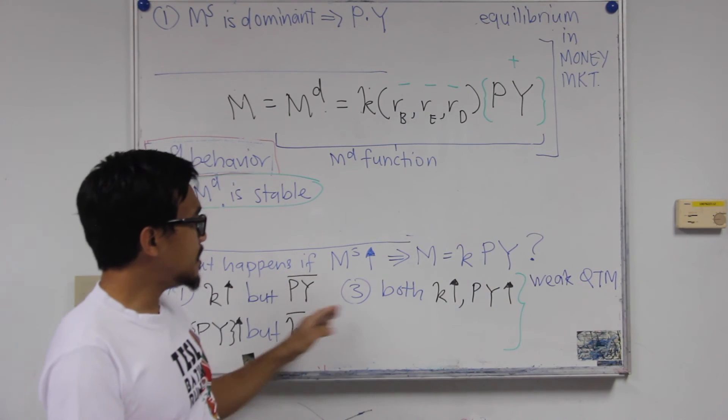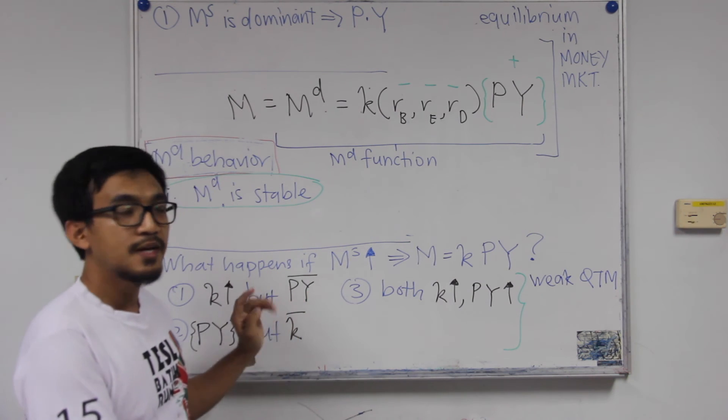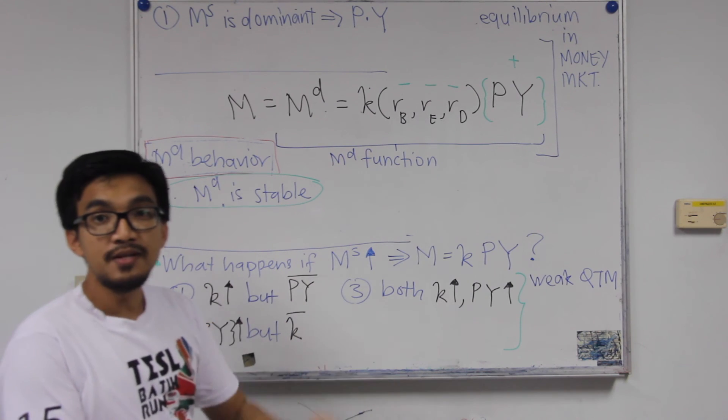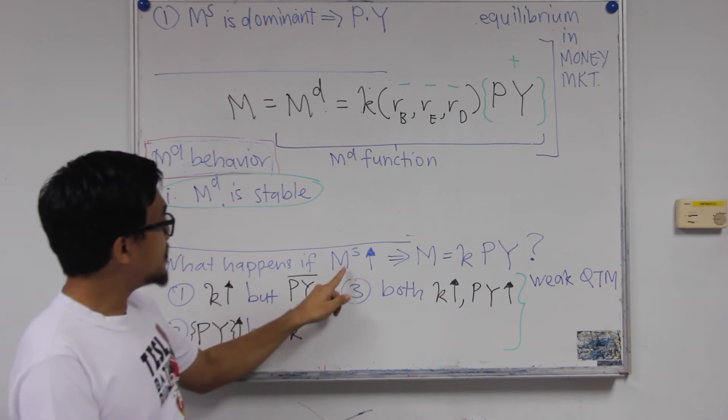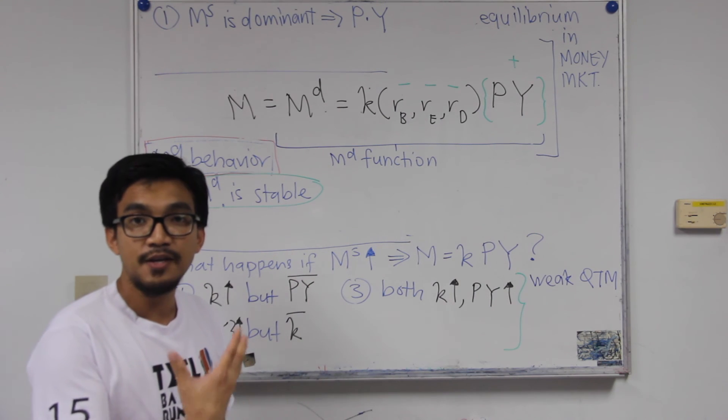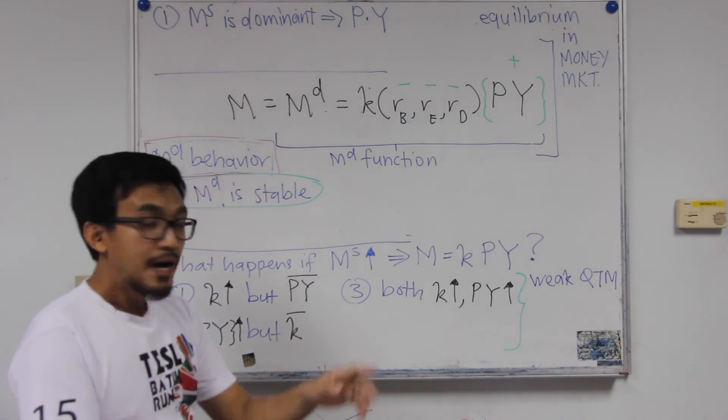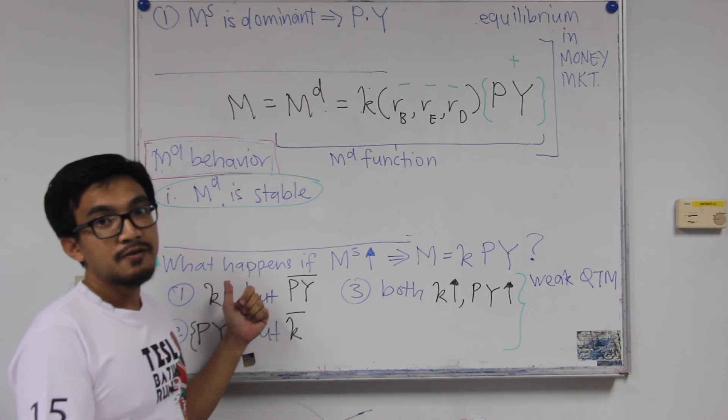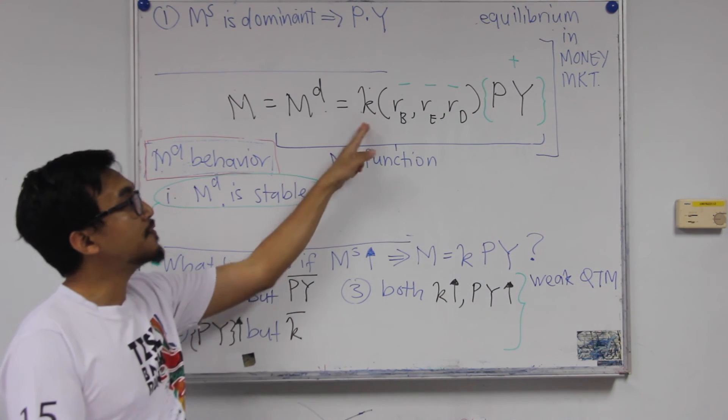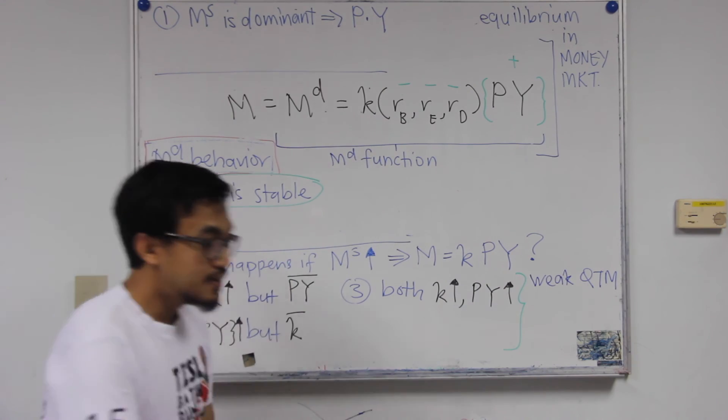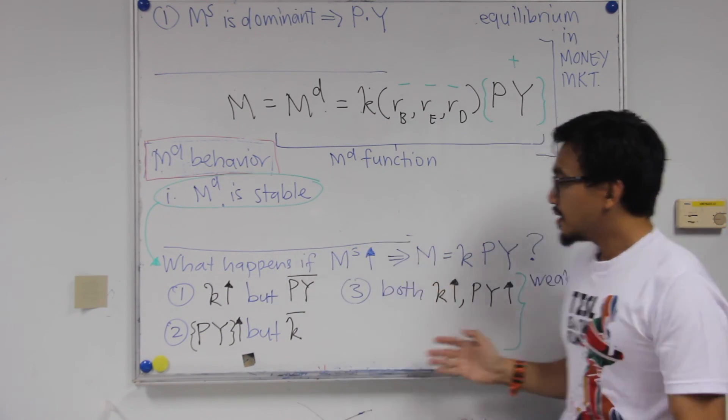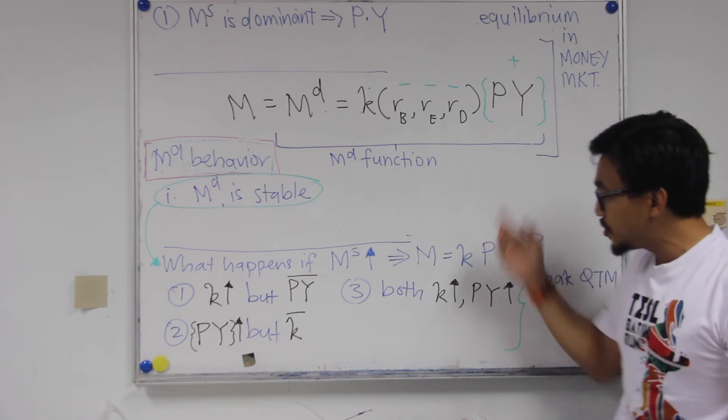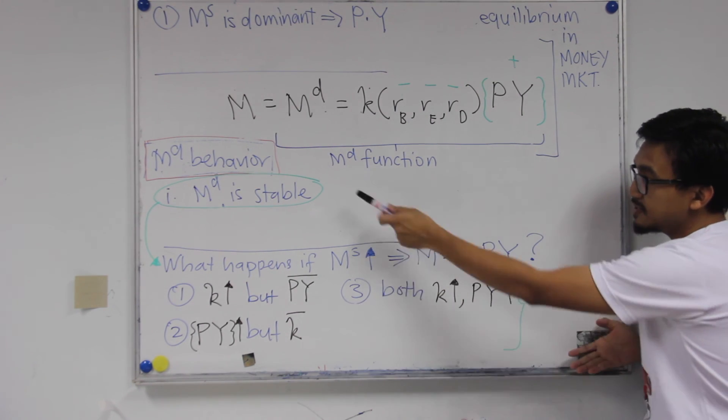So now you should be able to see that in these three cases, in these three possible situations that we have looked at in two cases, case number two and three, nominal income change. So this shows that M, change in money supply, can impact, can influence nominal income. However, in the first case, we could see that there is also a possibility that whenever money supply goes up, nominal income will not change, but actually will affect K.